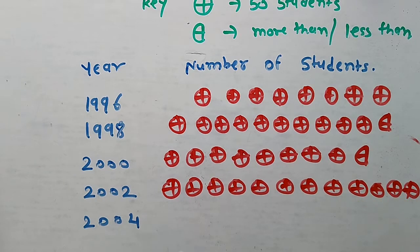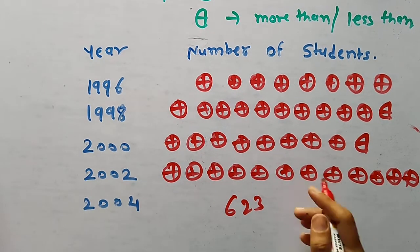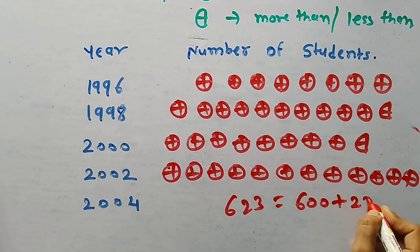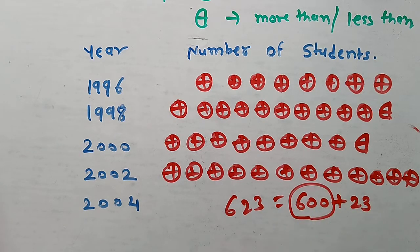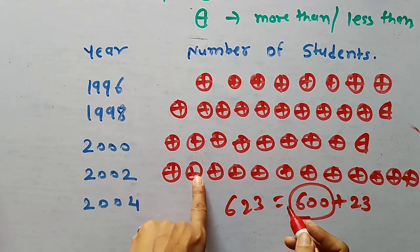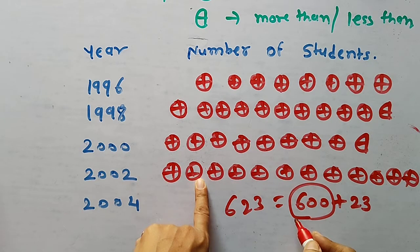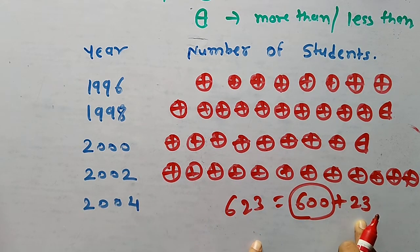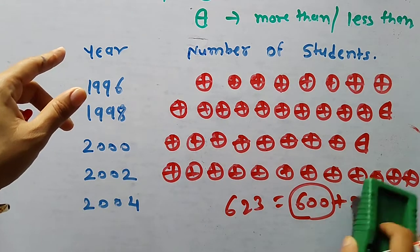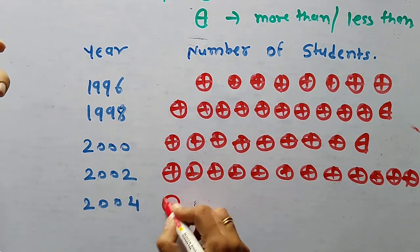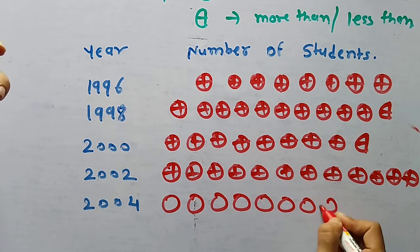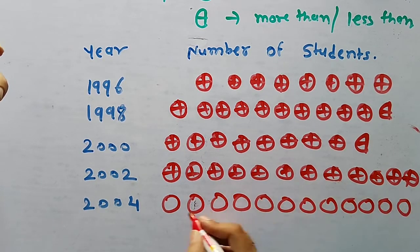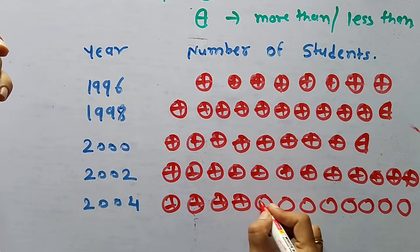For 2004, 623 means 600 plus 23. 600 divided by 50 gives 12 complete symbols, and a half symbol for 23, since it is more than 600 but less than 650. So draw 12 complete symbols and 1 half symbol.